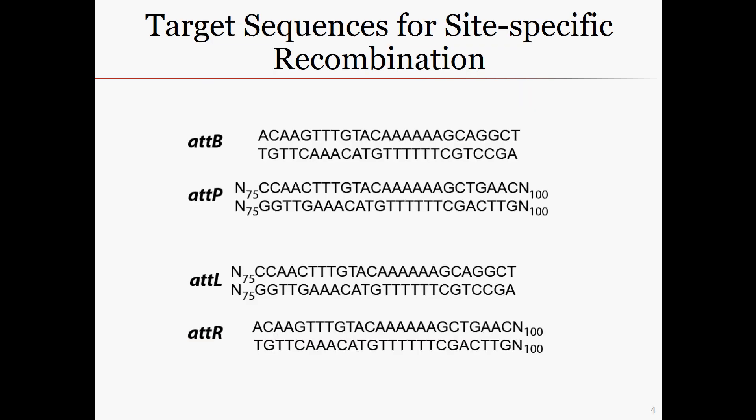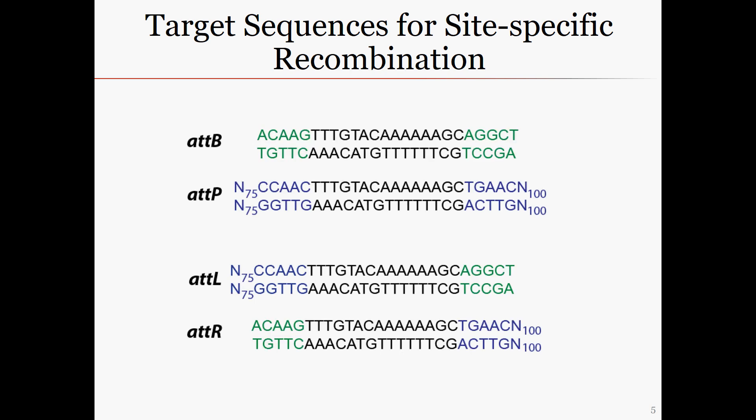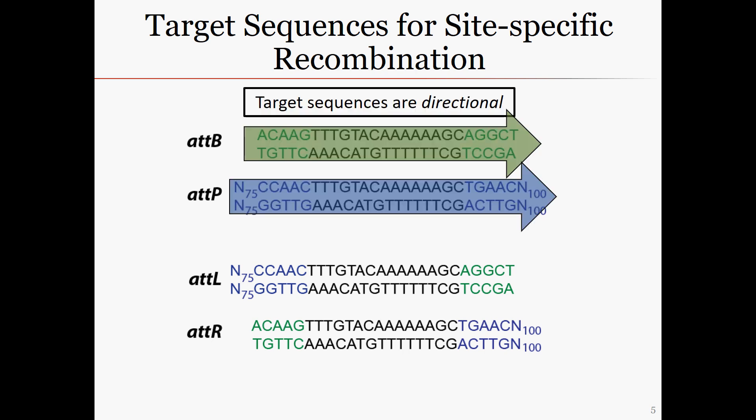These are the target and product sequences of the gateway site-specific recombination reaction. As you look at the sequences, you may notice a few features. First, these sequences all share a central nucleotide region, shown in black. Second, unlike restriction enzyme sites, these sequences are not palindromic. The non-palindromic sequence provides directionality.